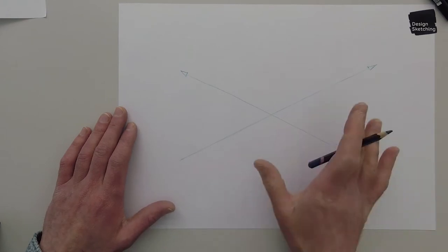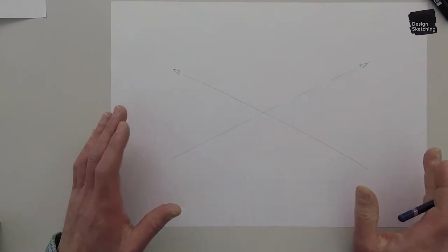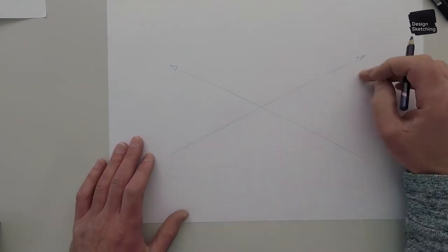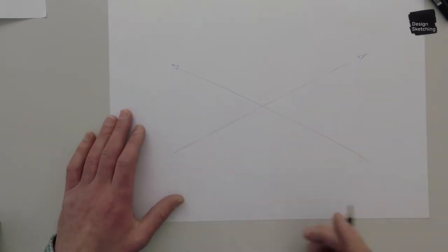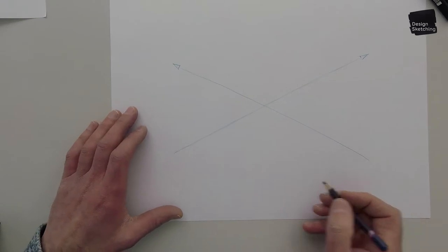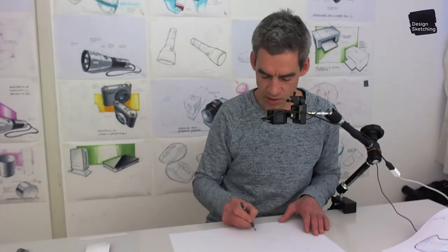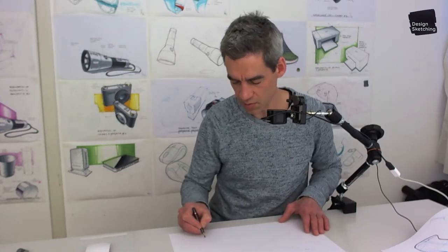So whenever I need to draw a line, I try to rotate my page as much as I can in my favorite direction. So a horizontal line, I could draw that like this. It just feels a bit unnatural. I'm positioning myself, I'm rotating my body a little bit to make that more comfortable.